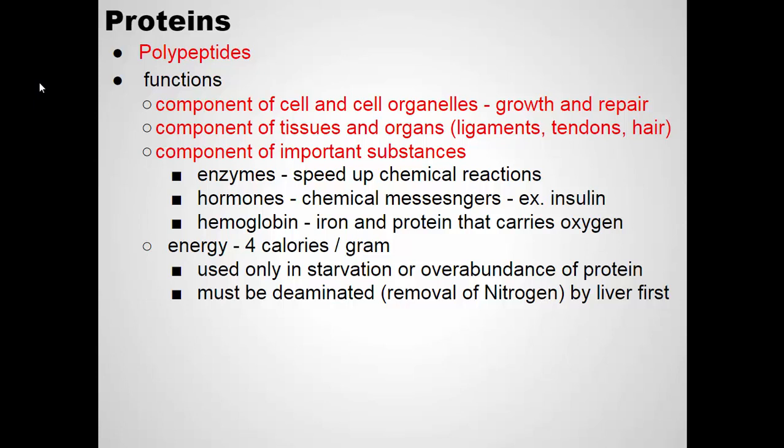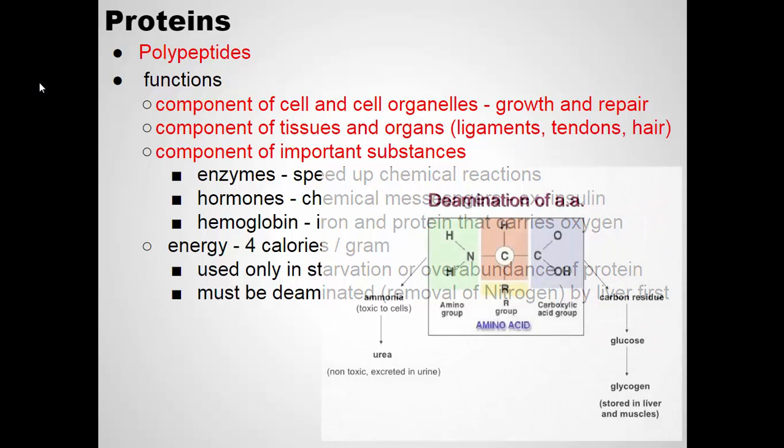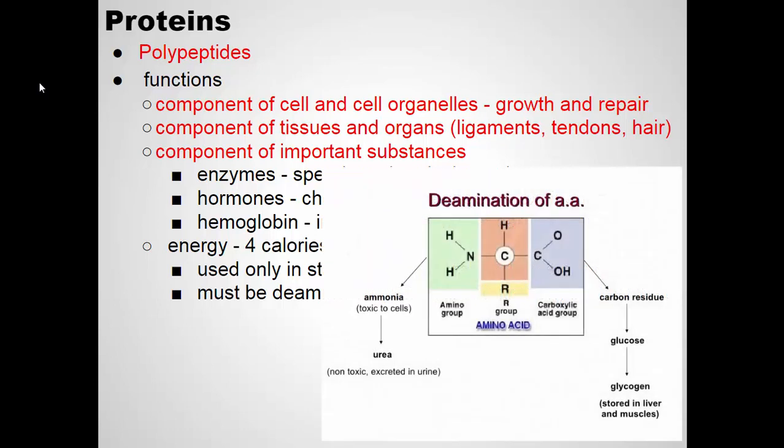Protein contains energy as well. In our diet, protein provides four calories per gram. Our body won't typically use our own protein in our muscles for energy unless it's a last resort — for example, if a person is starving. Or if a person is on a high-protein diet, our bodies will convert to using that protein for energy. However, the nitrogen in protein has to be processed by our liver in order to be excreted safely, so eating a high-protein diet can be hard on the liver or kidneys.